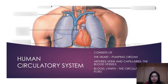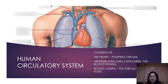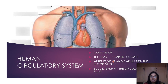Now we move to the human circulatory system, which is what this lecture series is all about. The human circulatory system consists of a pumping organ called the heart, channels or blood vessels such as arteries, veins and capillaries, and the circulating fluid — blood and lymph — which circulates through the entire system and is pumped by the heart. We will study each of these in great detail in the following lectures.